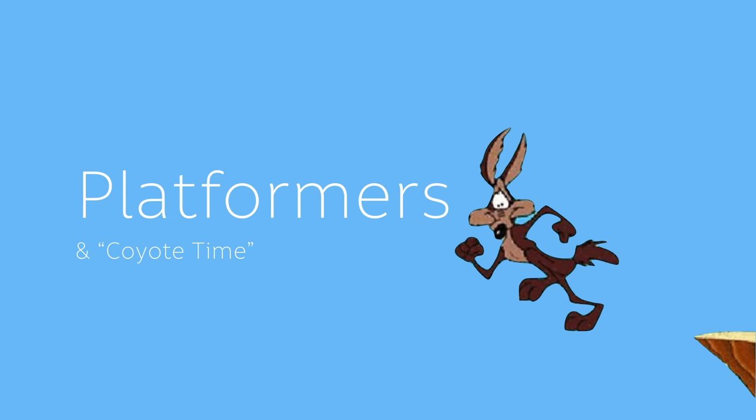Another one is coyote time. A lot of amateur game developers make platformers, and when you're making that platformer and you're running, it feels wrong. You slip off the edge and you die, or you don't make it to the end and you slip off and you die. And it's because it doesn't have coyote time, which is where you extend the window you're allowed to jump or how far you're going to make it. And without this, platformers just don't feel right.